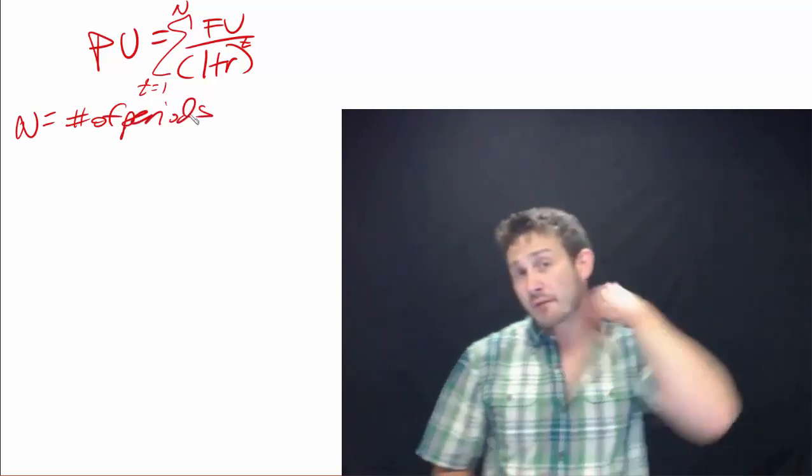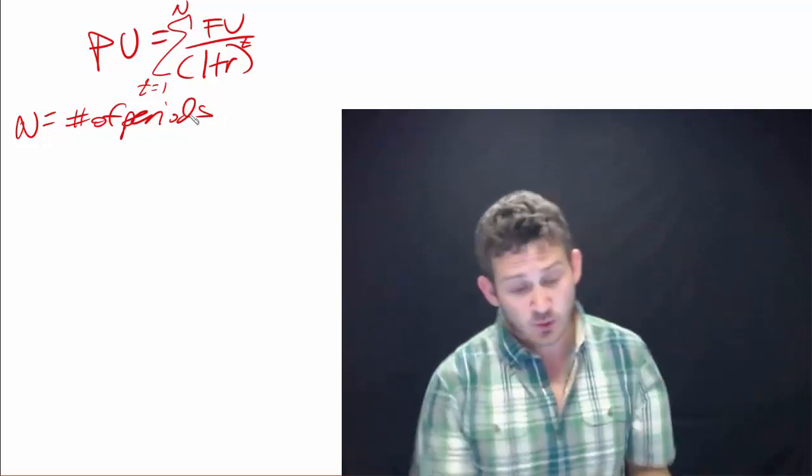So basically what we're having here is that we said on that subscript, that T there, is that we have add T equals 0, is today. We have T equals 1, and let's say at that point in time, we are going to receive a cash flow in the amount of $400.